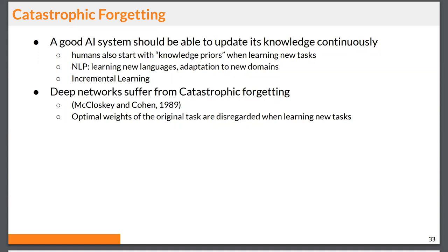Now I will talk about catastrophic forgetting. In theory, if we want to build a general AI system, we expect it to be updated continuously, since we don't have all data available at the same time. We also need to update it incrementally. When humans approach new tasks, they already have prior knowledge they exploit. Deep networks, however, usually suffer from catastrophic forgetting — a problem known for several decades. When training a network on a new task, the weights optimal for previous tasks are not considered and are basically overwritten by the new task.